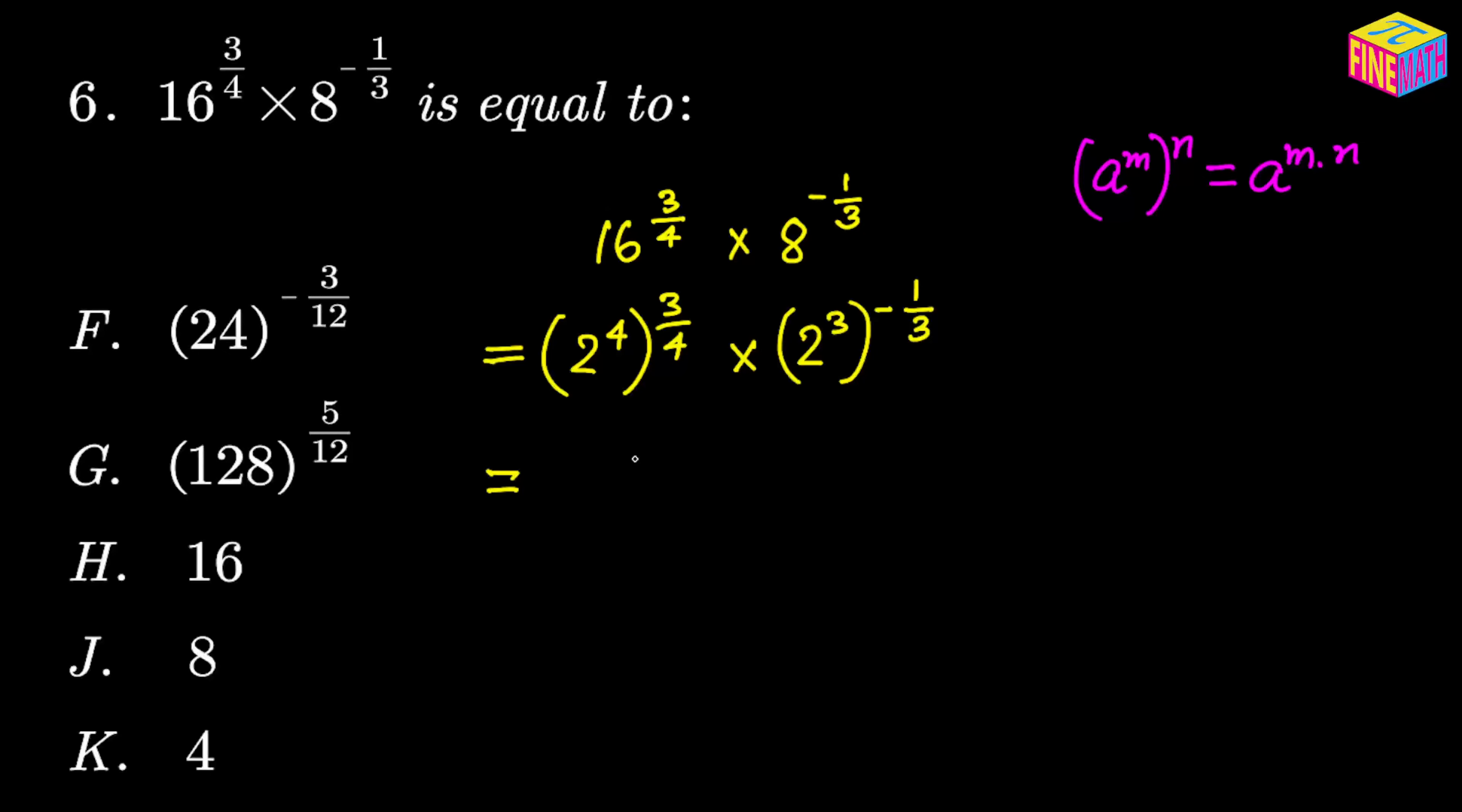Using that property, we get that the first term would be 2 to the power 4 times 3/4, and then multiplied by 2 to the power 3 times negative 1/3. Think of it like that. Let's assume the exponent inside the parenthesis is m and the exponent outside is n. Then the ultimate exponent would be m times n. That's exactly what I have done for both the factors here.